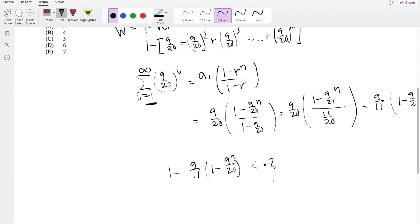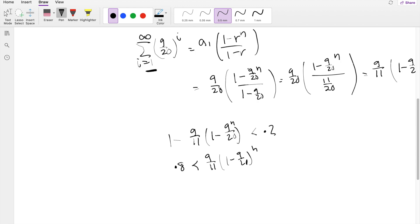Bringing this over to the other side, you get 0.8 is less than 9 over 11 times 1 minus 9 over 20 to the N. Multiply both sides by 11 over 9. 0.8 times 11 over 9 is 44 over 45.